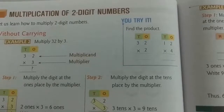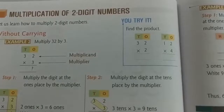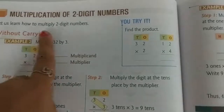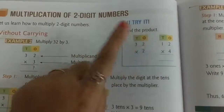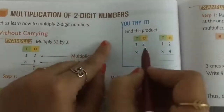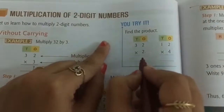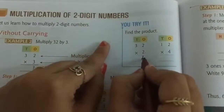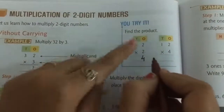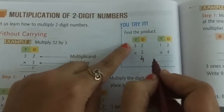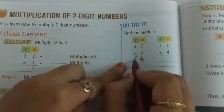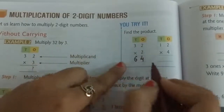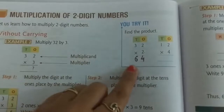Now open your textbook page number 80, multiplication of 2-digit numbers. Find the product. 2 twos are 4. So write 4 below the 1's place column. 2 threes are 6. So write 6 below the 10's place column. Our answer is 64.